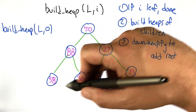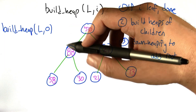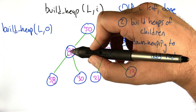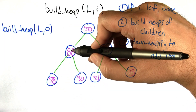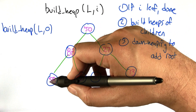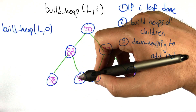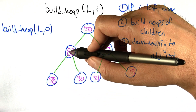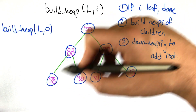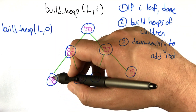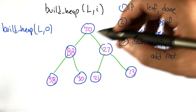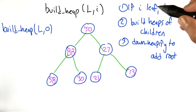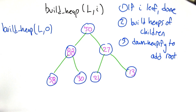How do we build a heap out of a smaller piece? We can do it recursively. To build a heap rooted at a node, we make the left child into a heap, make the right child into a heap, and then downheapify. The singleton nodes are already heaps, so anything that is a leaf is already done — that's our termination condition.